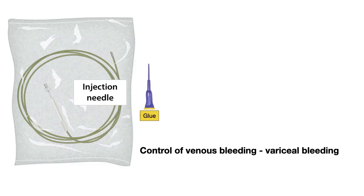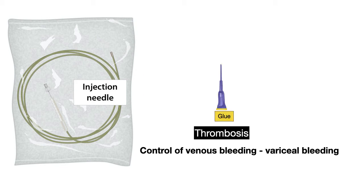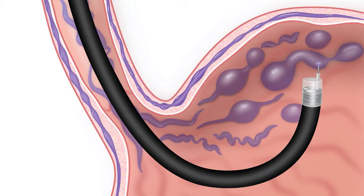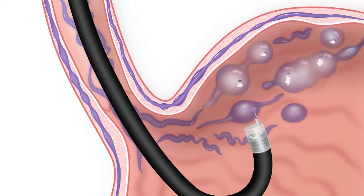Let us talk about glue, which is used to control fundic variceal bleeding or gastric varices, and also esophageal varices. It works by causing thrombosis. Here is gastric varices being injected with the glue. You inject small amounts slowly — you do not want to inject large amounts fast because the glue can travel through the bloodstream and create clots in the lungs or brain, causing significant problems. Injection of glue should be done slowly and in small amounts, and as you inject, tell your endoscopist: 1 cc injected, 2 cc injected.